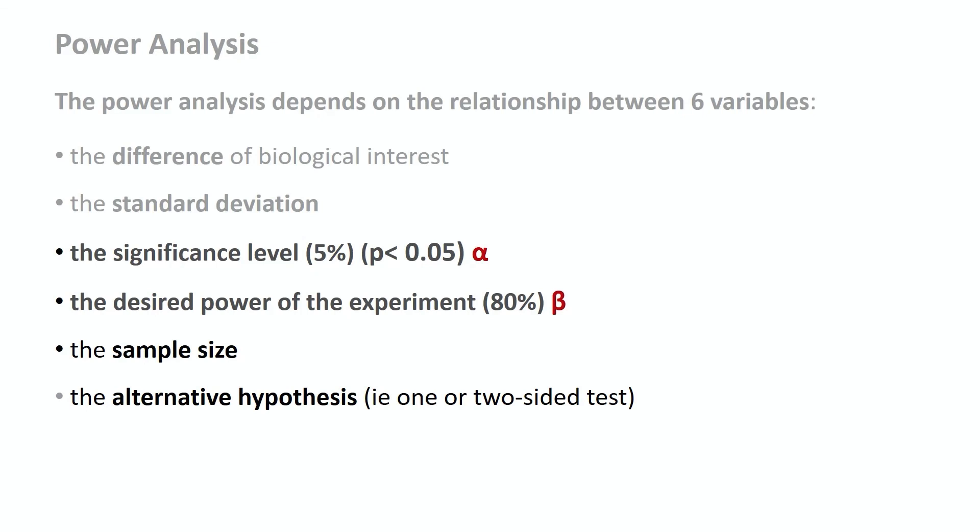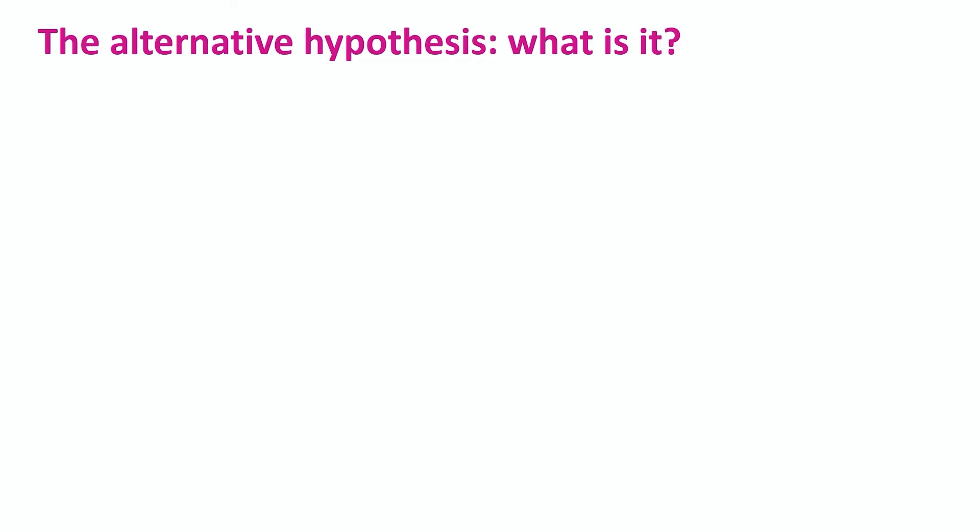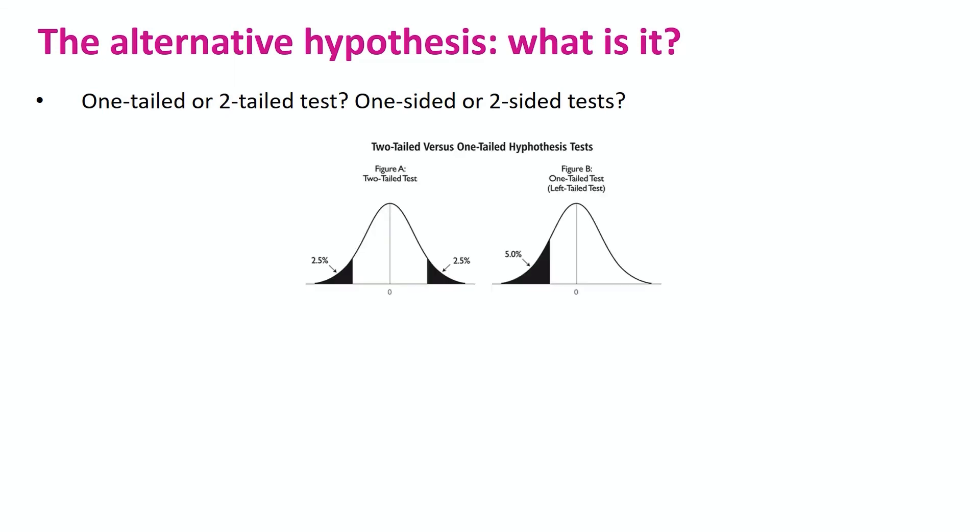So, we are left with the alternative hypothesis, which can be a bit confusing, actually. It is about choosing between one or two tailed tests, also referred to as one or two-sided tests. Now, the tails or sides in question are these here, on each side of the distribution. This is the distribution of a difference. So, under the null, we have a difference of zero, and as we move away from it, the difference increases, and we are more and more likely to reach significance, until we reach the critical value, and then we do reach significance.